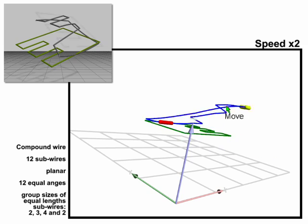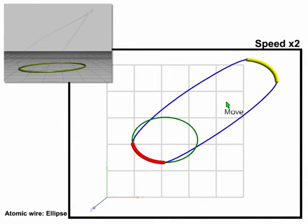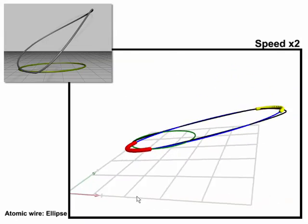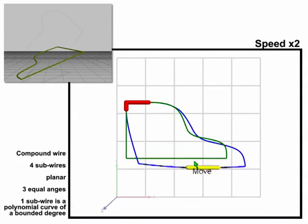Here we show deformation examples of individual wires with different internal properties to preserve. In these examples, the reference wires are in green, the deformed wires are in grey, and the optimized wires are in blue.